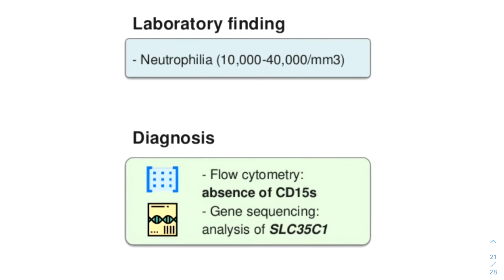LAD2 is characterized by persistent leukocytosis due to neutrophilia, in which the counts can go as high as 40,000 per cubic millimeter.